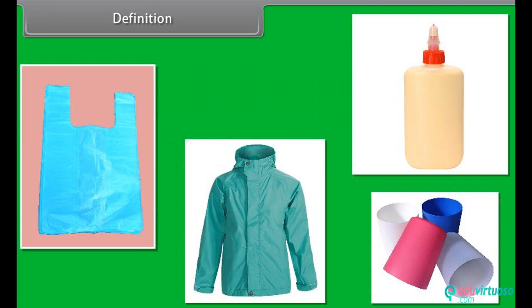In our everyday life, we use a number of materials like plastic dishes, cups, automobile tires and seat covers, plastic bags, rain coats, radio, TV and computer cabinets. A wide range of synthetic fibers for clothing, synthetic glues, flooring materials are all polymer-based products.